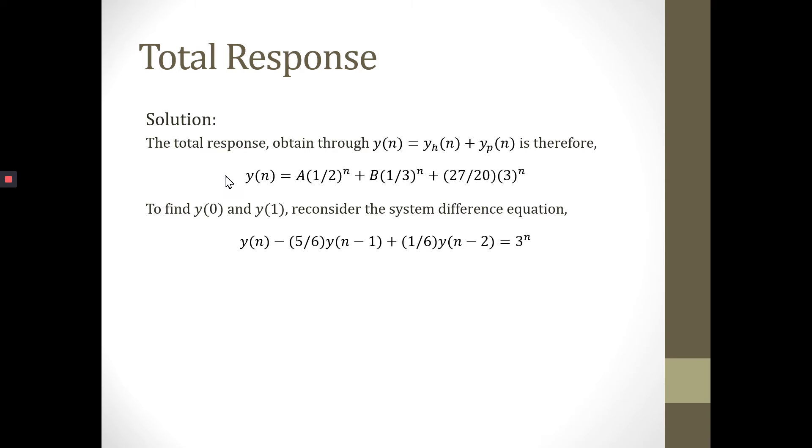The next step is to construct the total response based on the equation Y(n) equals the homogeneous solution Yh(n) plus the particular solution Yp(n), based on the equation that we solved previously. We have this one from the homogeneous equation and this one from the particular solution.